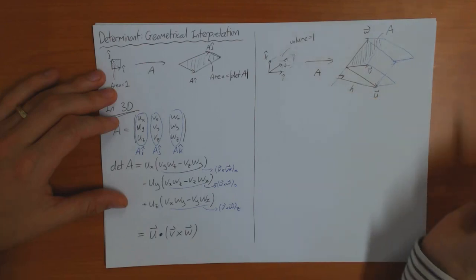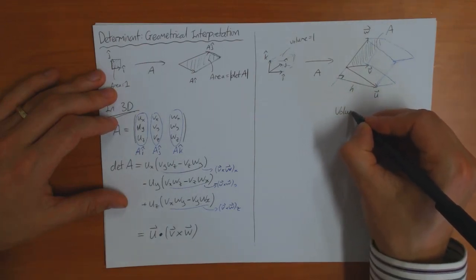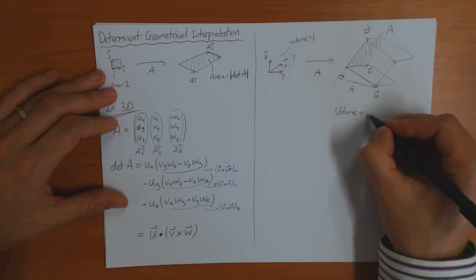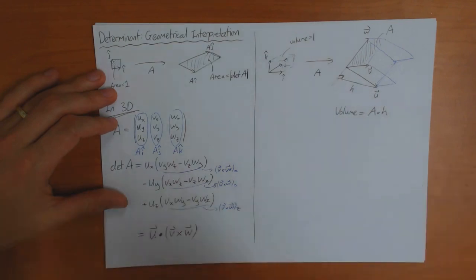and this height is H here, then the volume of this shape is equal to the area A times the height H. H is the perpendicular height.